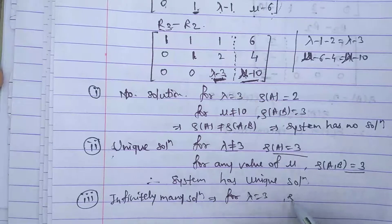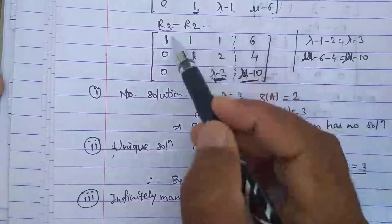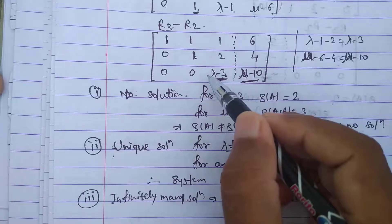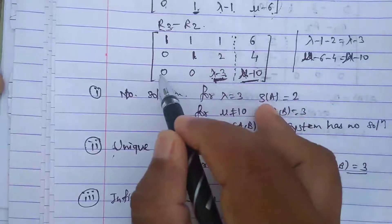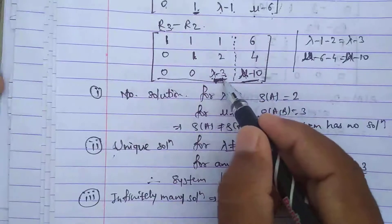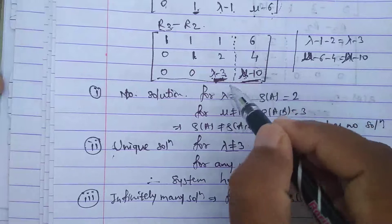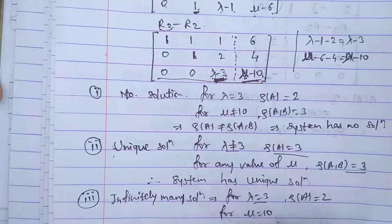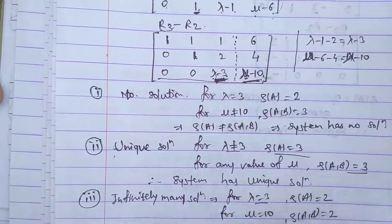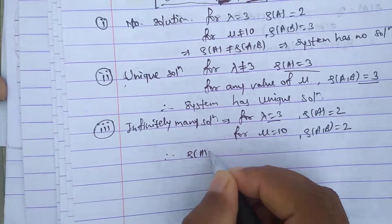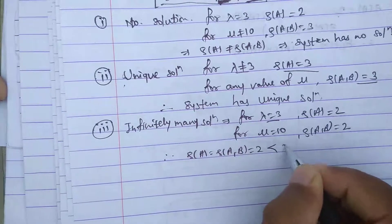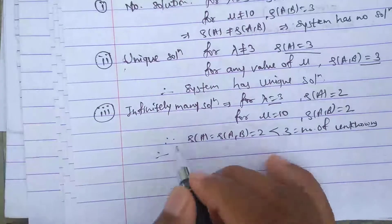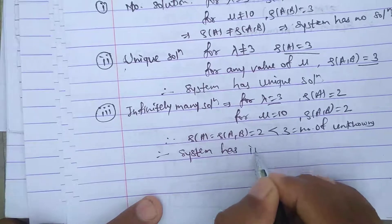For lambda equals 3, this element becomes 0, so rank of A is 2. For rank of [A|B] to also be 2, we need the entire last row to be zero, meaning mu minus 10 must also equal 0, so mu equals 10. Therefore, for lambda equals 3 and mu equals 10, rank of A equals rank of [A|B] equals 2, which is less than 3 unknowns, so the system has infinitely many solutions.